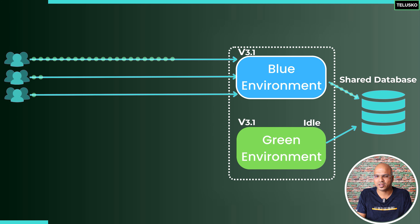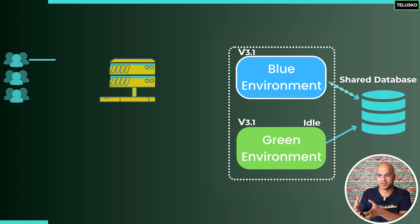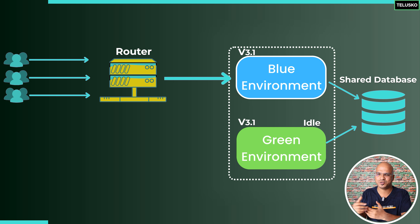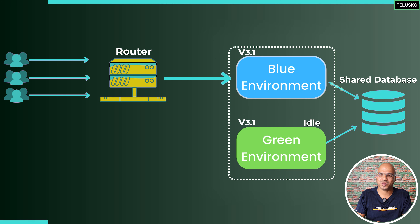This is a concept you can implement using cloud services. You also need a router in front that controls the direction of traffic — users have no idea whether they're going to the blue or green instance. You configure the router to specify which instance is live and which is idle. It's not a good idea to use both instances simultaneously, because when you want to upgrade, the users on the second instance will face issues.